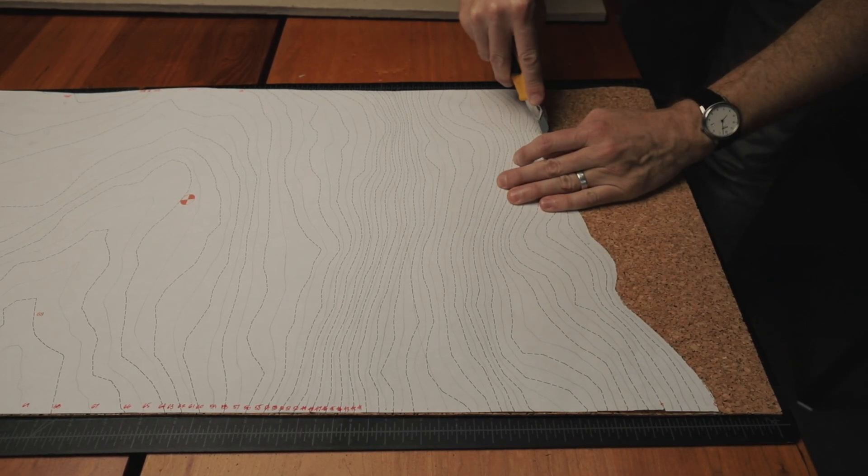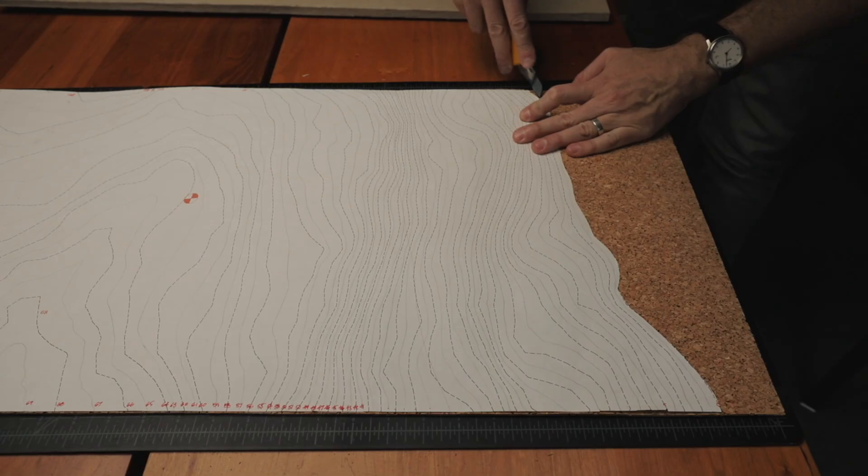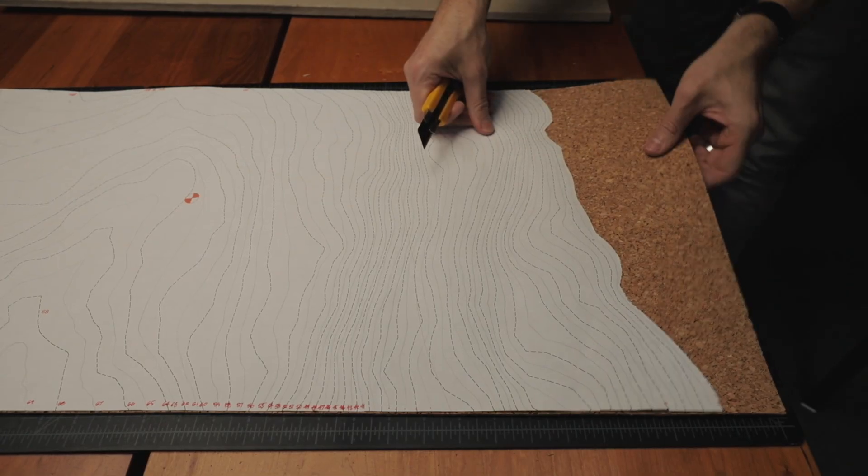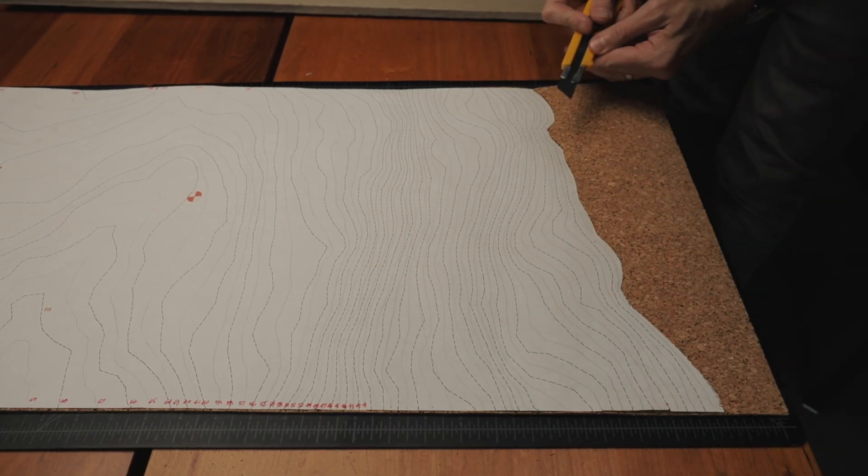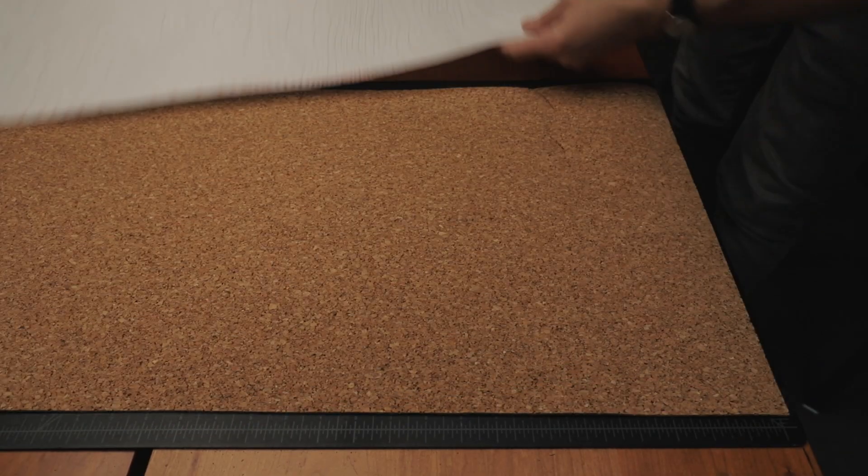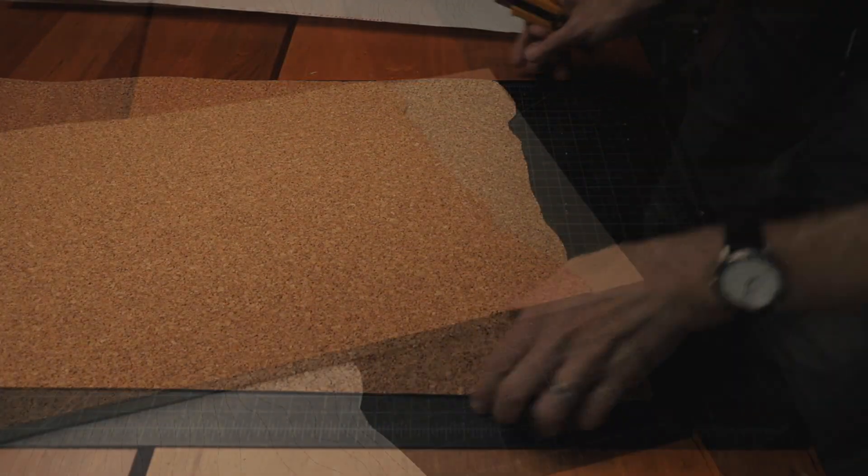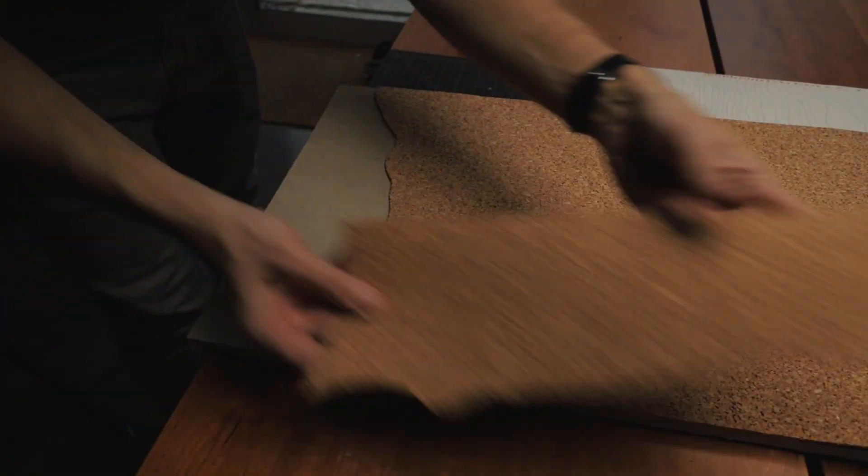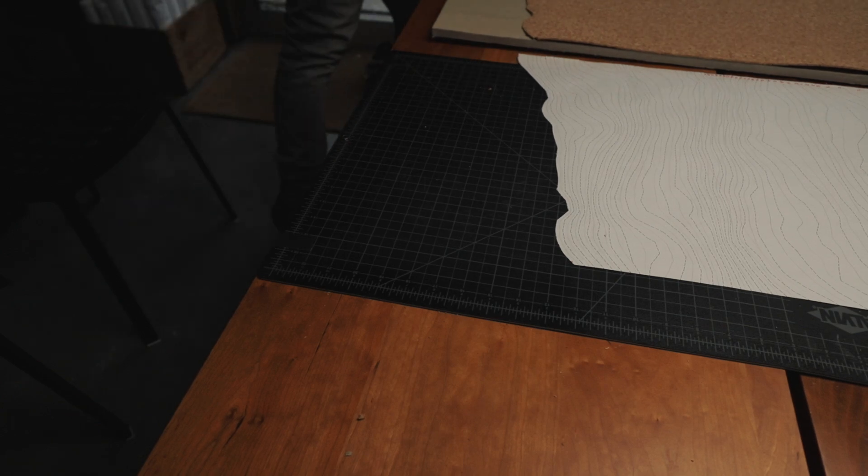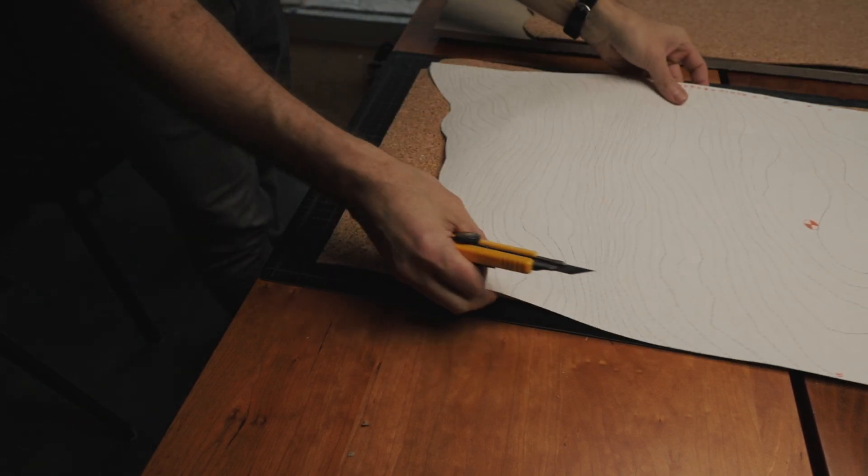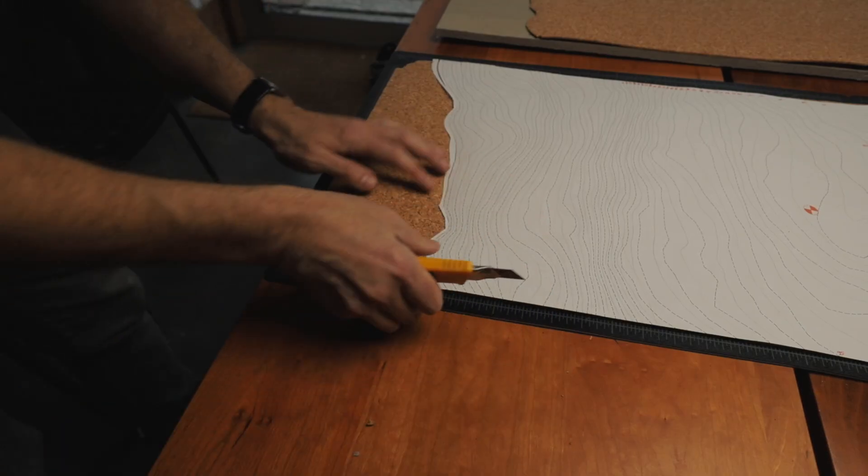Doesn't have to be completely precise - this is a rocky shoreline so having kind of some uneven or more jagged cuts seems appropriate. Make sure you always keep a sharp blade. You're always going to save the scraps so we can use those later on. Cork is really forgiving in terms of how you're cutting with it.